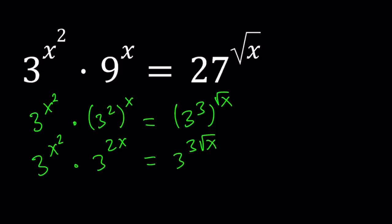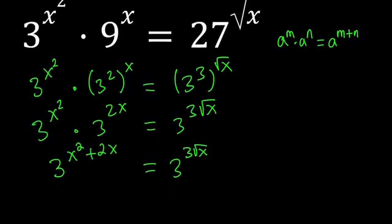Now on the left hand side we have a product, so when you multiply two powers with the same base you add the exponents. If you have a to the power m times a to the power n it becomes a to the power m plus n. So we can write 3 to the power x squared plus 2x, and that is equal to 3 to the power 3 square root of x. Now we have the same base on both sides, so we can say that the exponents are equal.